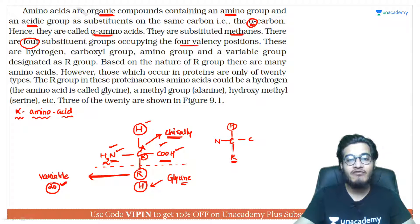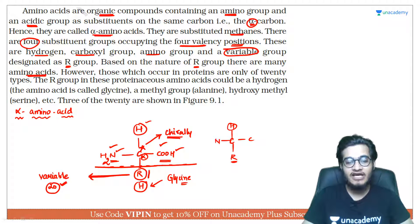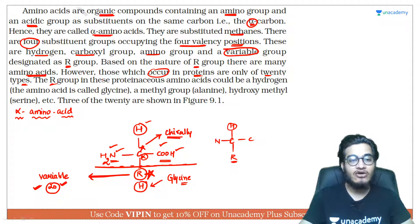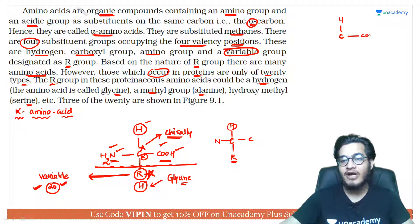So the 4 substitute groups occupy the 4 valency positions of the carbon: one hydrogen, one carboxylic group, one amino group, and one variable R group. It is on the basis of this R group that the different 20 amino acids show different behavior, because everything else is the same in an amino acid — only the R group is variable. All properties of any amino acid arise from this R group. However, those that occur in proteins are only 20 types. The R group in these proteinaceous amino acids could be hydrogen (glycine), a methyl group (alanine), or a hydroxymethyl group (serine).